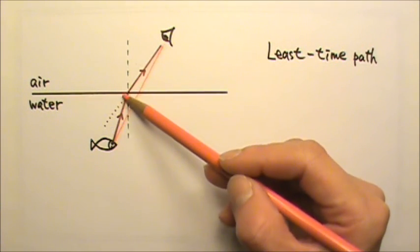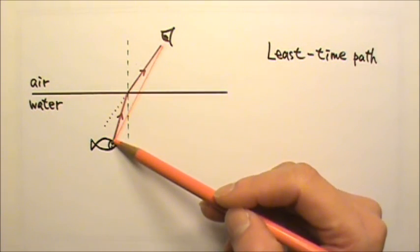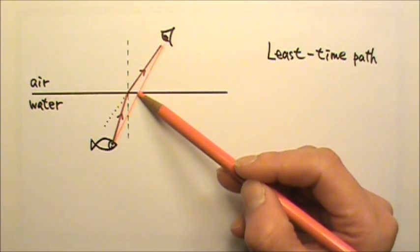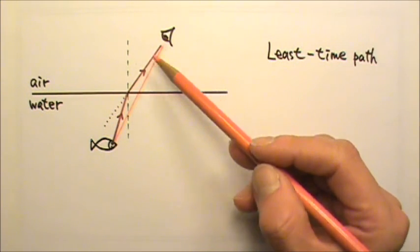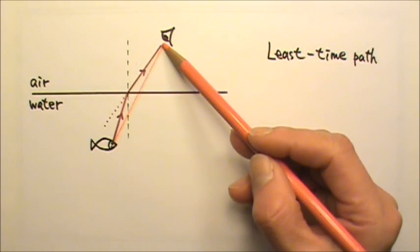But compared to the real path, there is more distance for light to travel when it is in the slower water. That's why the straight line path takes more time than the actual path of the light ray.